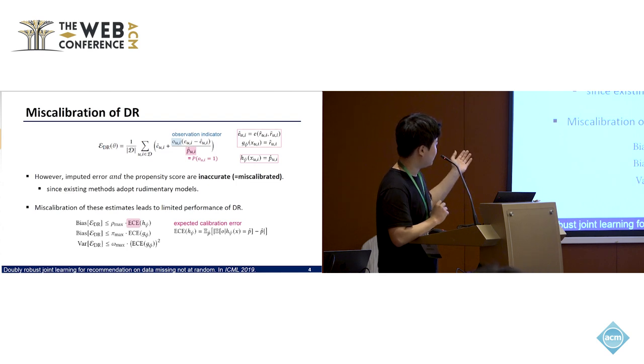So the bias and the variance of this doubly robust estimator is upper bounded by this expected calibration error.